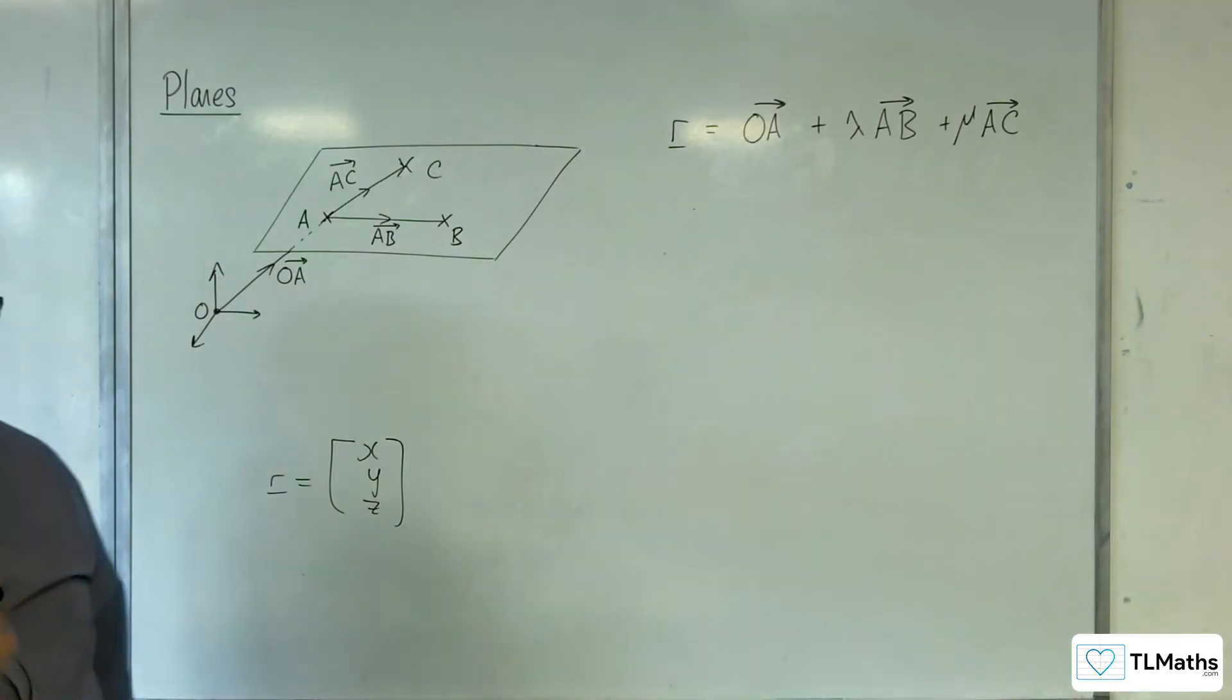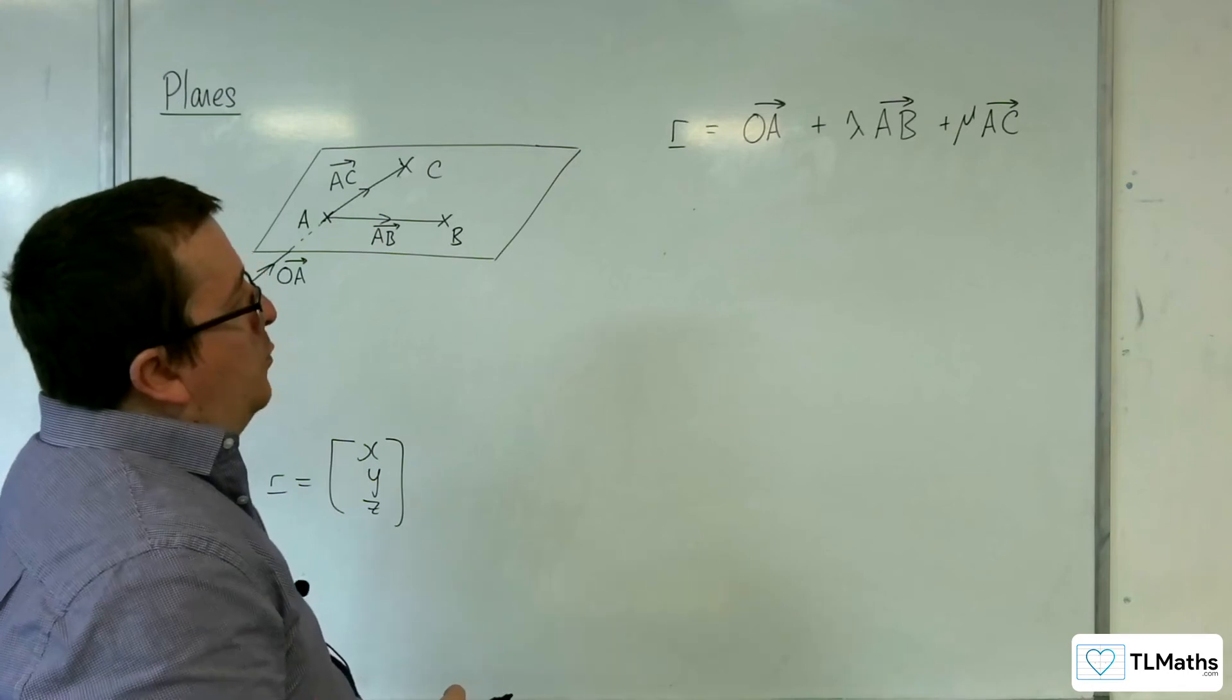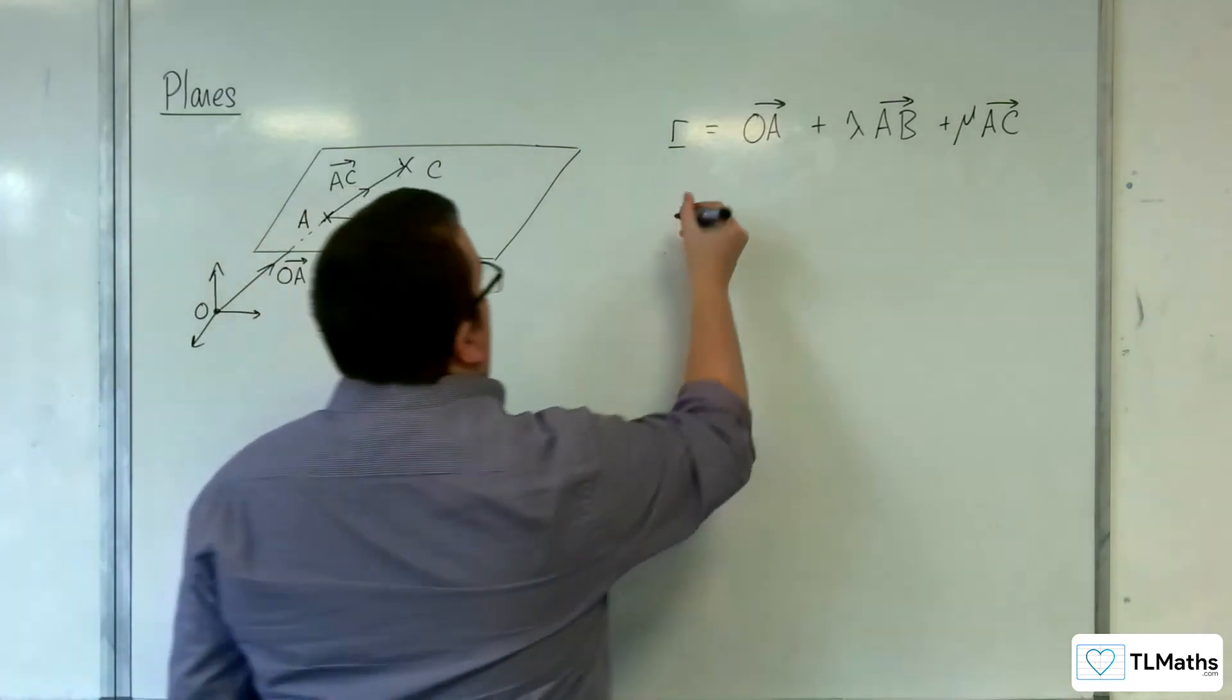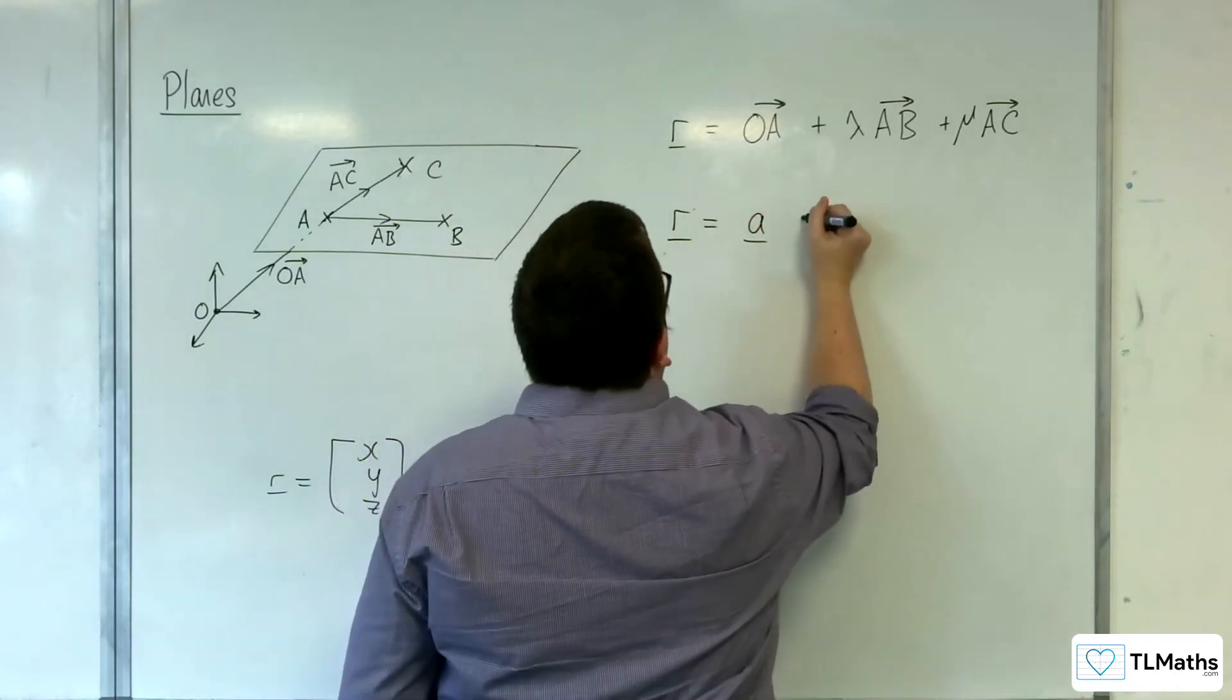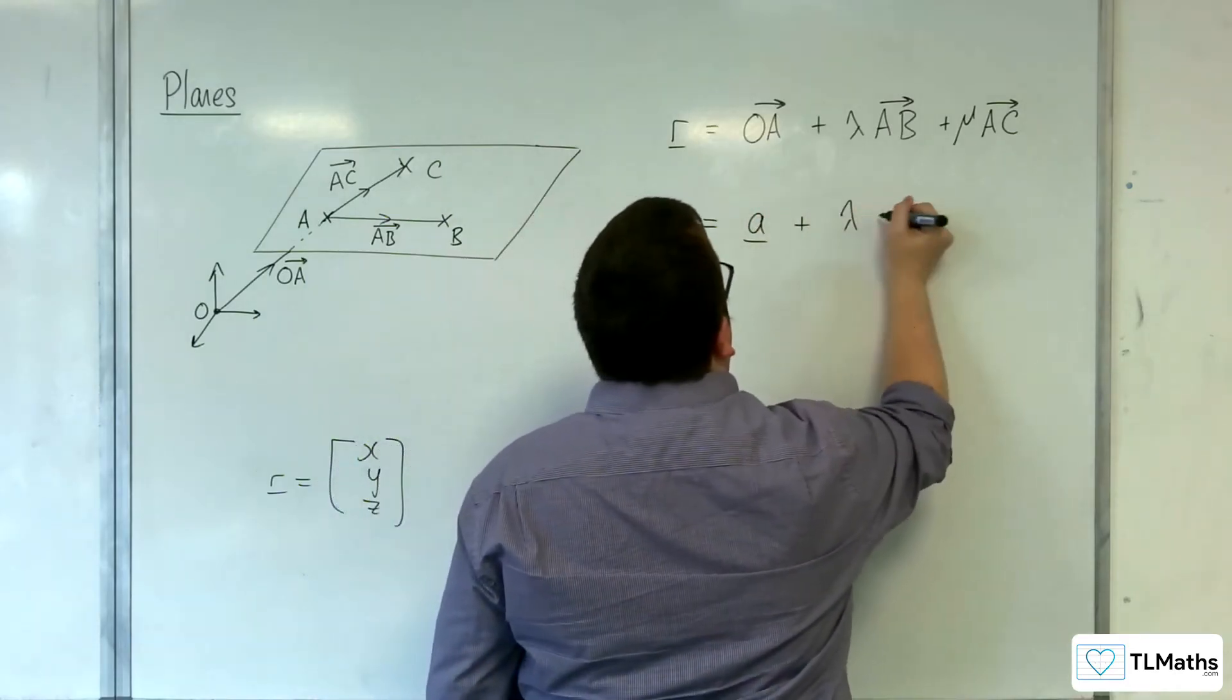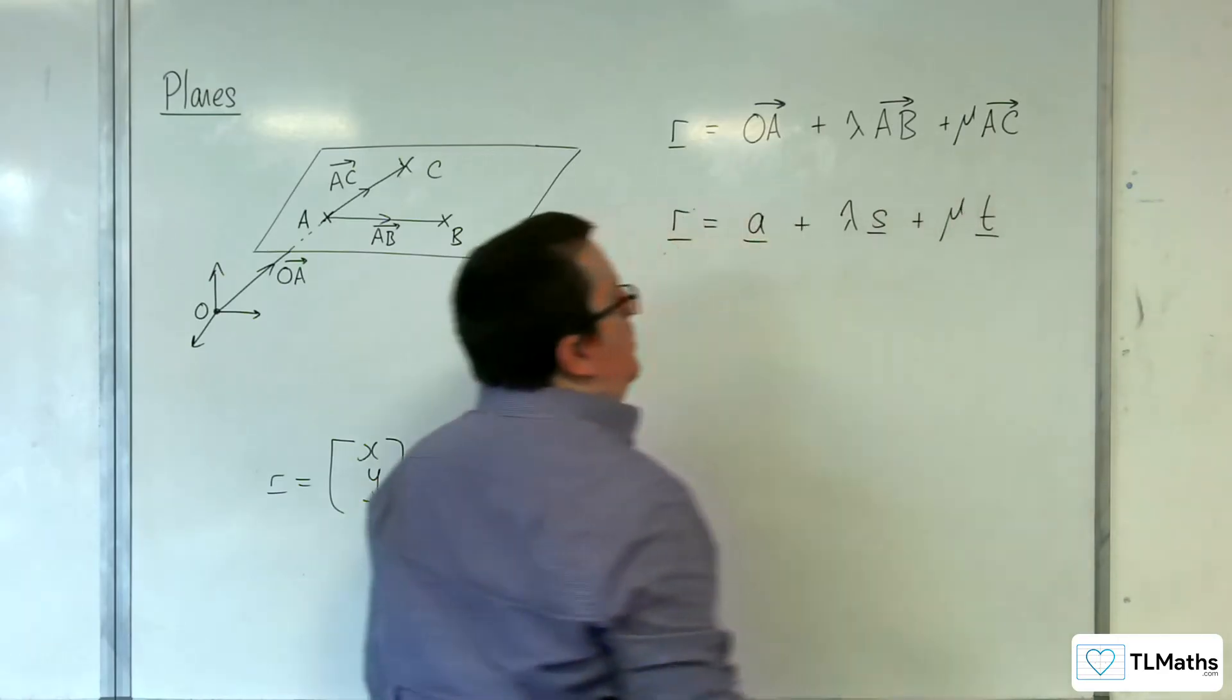Now in general terms, the way that we often write this is something like R is equal to A plus lambda S plus mu T, for example.